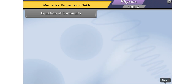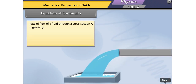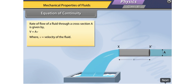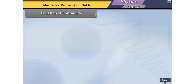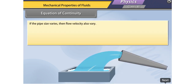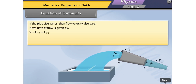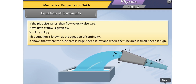The rate of flow of a fluid through a cross-section A is given by V = Av, where v is the velocity of the fluid and V is the volume of the fluid. If the pipe size varies, then flow velocity also varies. The rate of flow is given by V = A1v1 = A2v2. This is known as the Equation of Continuity. It shows that where the tube area is large, speed is low, and where the tube area is small, speed is high.